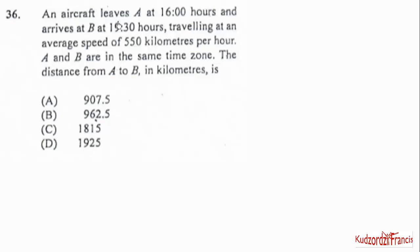An aircraft leaves A at 1600 hours and arrives at B at 1930 hours, traveling at an average speed of 550 km per hour. Now A and B are in the same time zone. The distance from A to B in kilometers is. So we know the speed is given by distance over time taken.